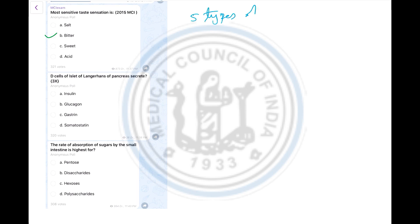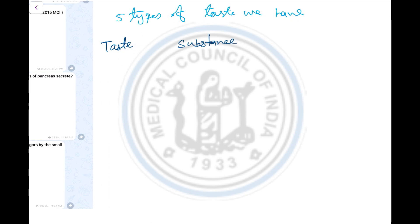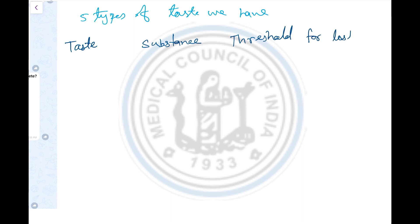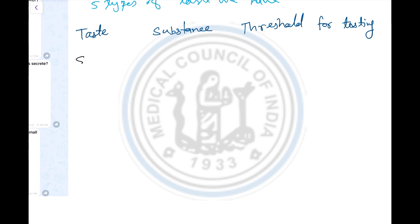We have five types of tastes. We are drawing a table — writing 'Taste,' 'Substance,' and 'Threshold for Tasting.' The first taste is salty. The substance is sodium chloride, and the threshold for tasting is 0.01 molar.